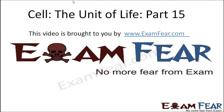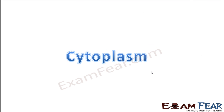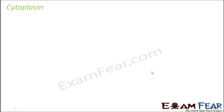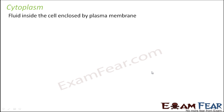This video on 'Cell: The Unit of Life, Part 15' is brought to you by ExamFear.com — no more fear from exams. We are going to talk about the third most important part of a cell: cytoplasm. The name itself defines it — cyto means cell and plasm means plasma, a fluid-like substance. The fluid inside the cell enclosed by the plasma membrane is known as cytoplasm.